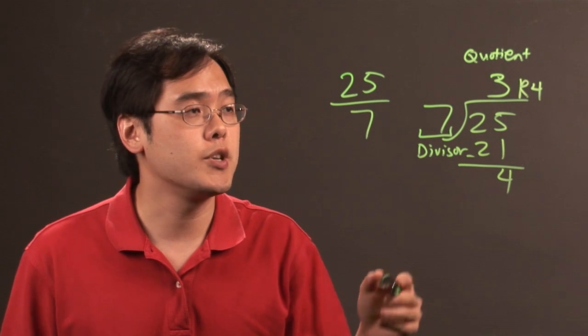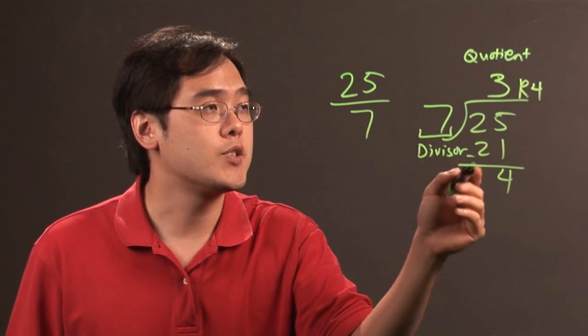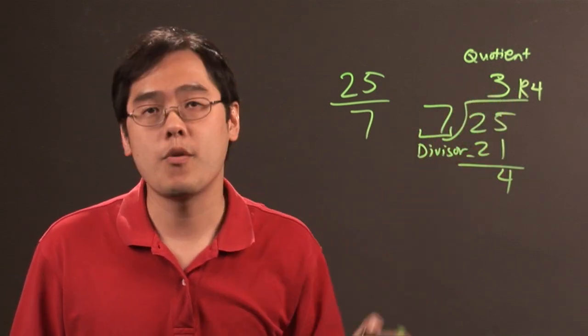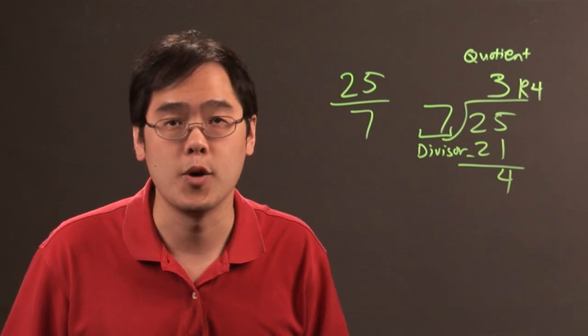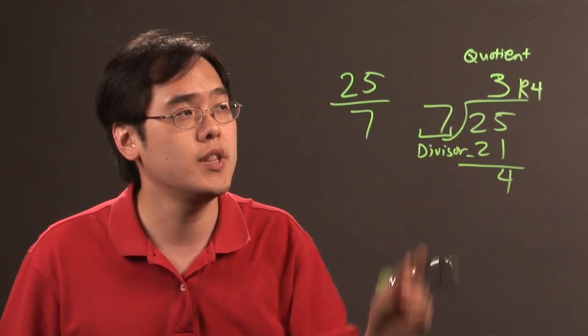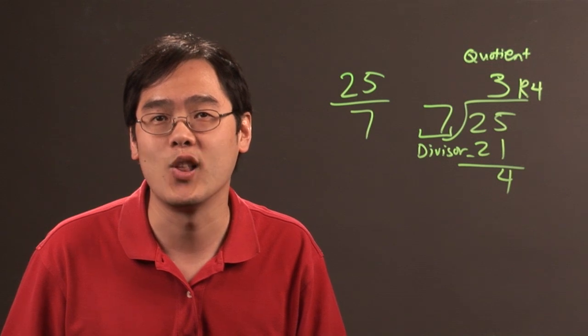So when it comes to the relationship between the divisor, quotient, and remainder, they're all basically parts of the long division method. So I'm Jimmy Chang and that's the relation between the divisor, quotient, and remainder in the long division method.